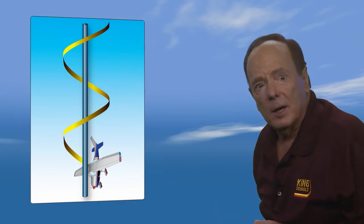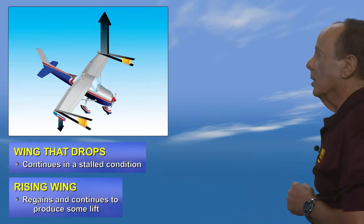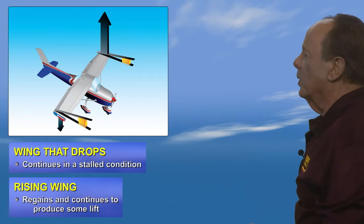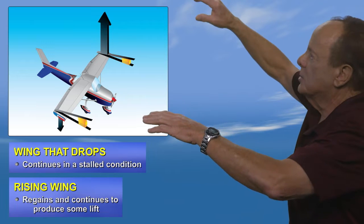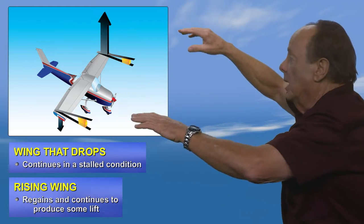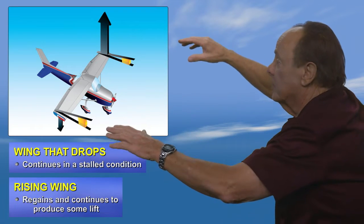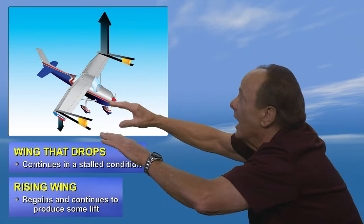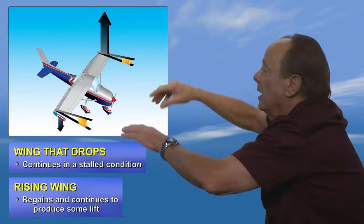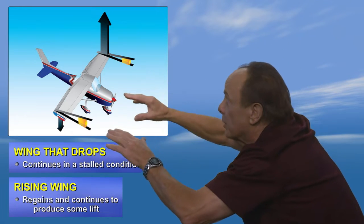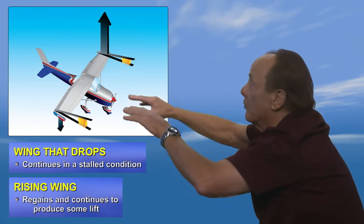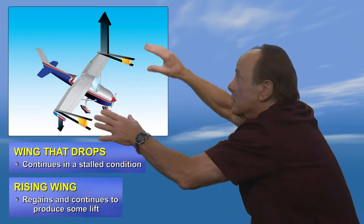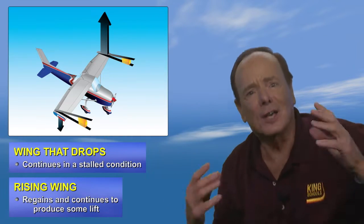In a spin entry after a full stall, the wing that drops continues in a stalled condition at a higher angle of attack. The other wing that rises has a reduced angle of attack and continues to produce some lift. That difference causes auto-rotation — and that is a spin.